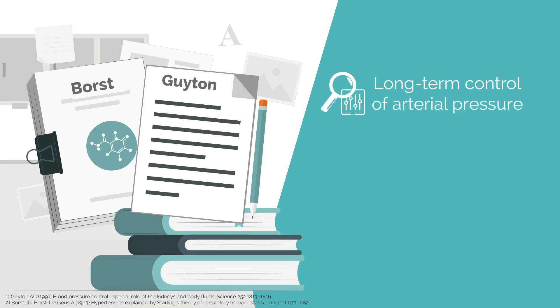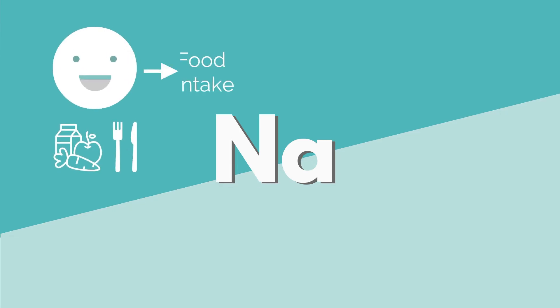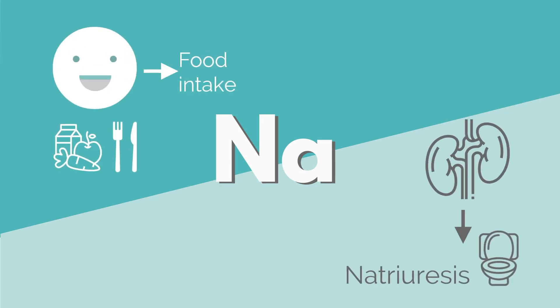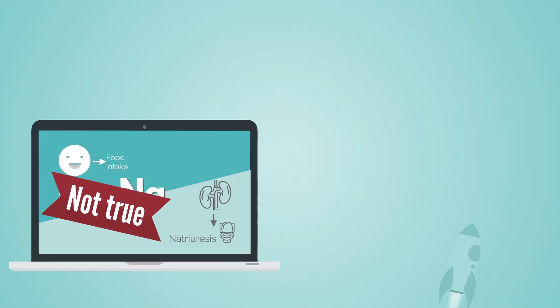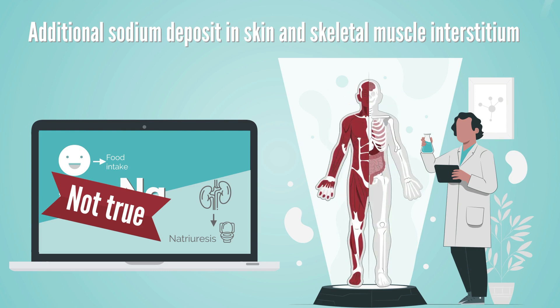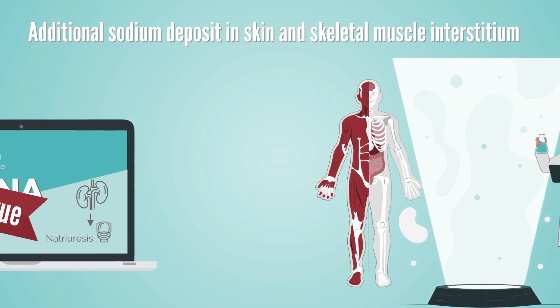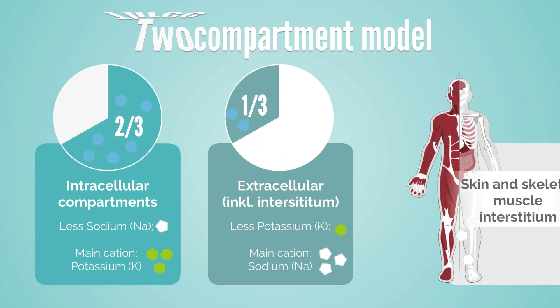These mechanisms were first described by Borst and later on by Guyton, who both demonstrated that long-term control of arterial pressure is closely related to body fluid homeostasis. Previously, it was assumed that an equal amount of consumed sodium is excreted by the kidneys in a ratio of 1 to 1. Studies clearly demonstrated this not to be true, and scientific advances in space medicine and magnetic resonance imaging technology revealed an additional sodium deposit in skin and skeletal muscle interstitium. Tissue deposits of sodium therefore turned the two-compartment model into a three-compartment one.